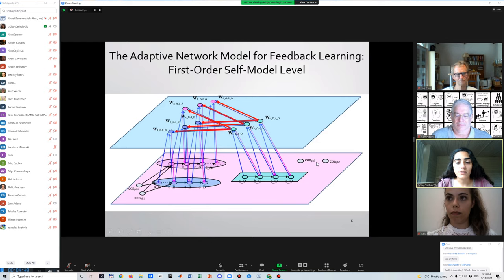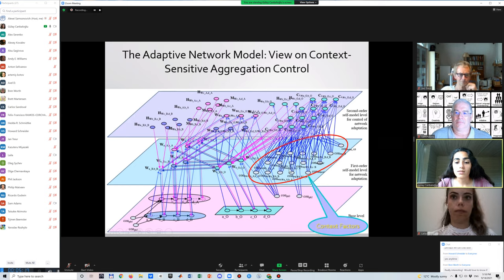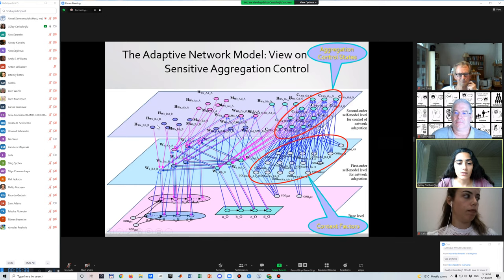As I said, we have four different phases. Therefore, we have four different context states here. These context states are like the switch between the phases. The base level is here and this is like the core of our model. In this first order self-model level, we have W states. And we have also these context factors. These are needed to determine the context, the case, because our model is context sensitive. In the second order self-model level, we have aggregation control states, these C states. And also, we have H states for speed factor, M states for learning persistence, higher order W states for the W-to-W connections for feedback and forward learning.